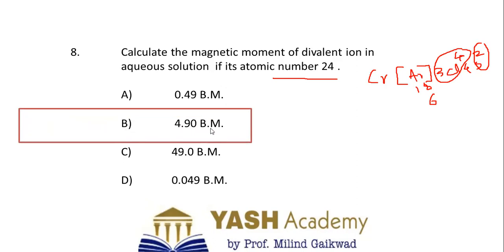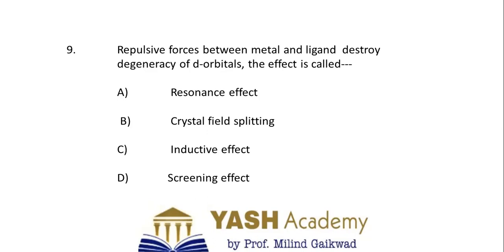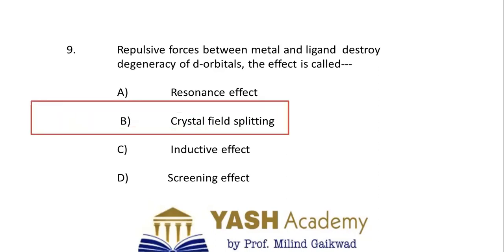Ninth question: repulsive forces between metal and ligand destroy the degeneracy of d orbitals. When a ligand approaches the metal, the five d orbitals split up into two sets. This effect — the splitting of five d orbitals into two sets due to the approach of a ligand — is called Crystal Field Splitting.